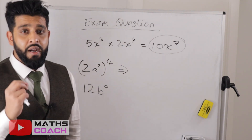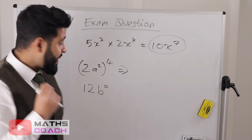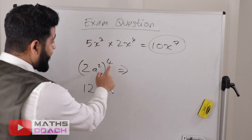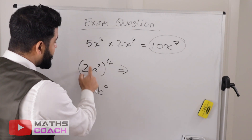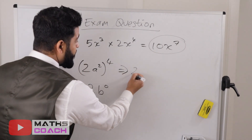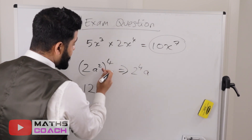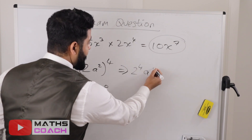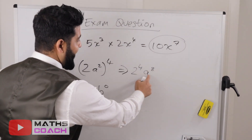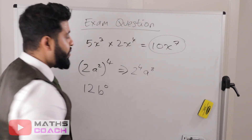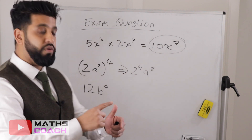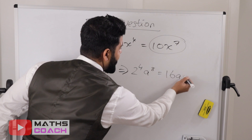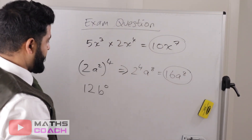Next, 2a squared in a bracket to the power of 4. The 4 powers everything inside the bracket — a common mistake is forgetting to apply the power to the coefficient. So you get 2 to the power of 4 and a to the power of 2 times 4, which is a to the 8. 2 to the power of 4 is 2 times 2 times 2 times 2, which is 16. So the answer is 16a to the power of 8.